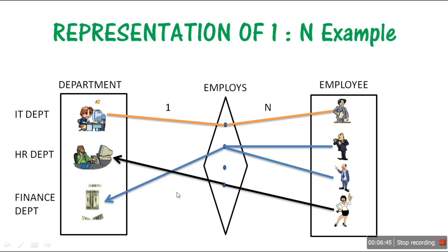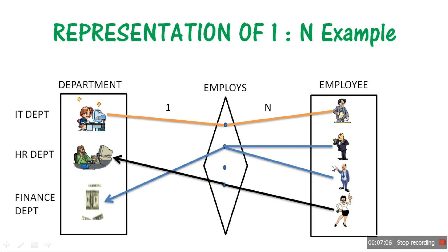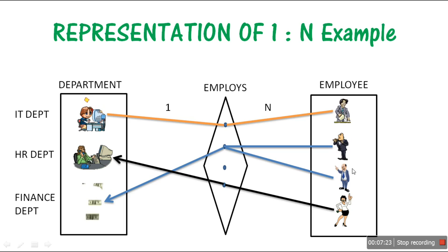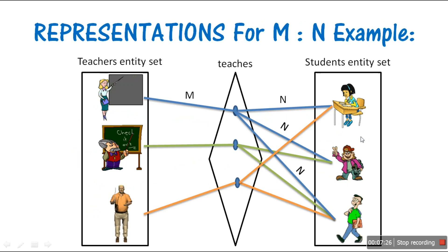To represent one-to-many (1:N) in an ER diagram, we use an arrow on the 'one' side and no arrow on the N side — just a straight line. Either we write '1' and 'N' and use no arrows, or we use an arrow on the one side and no arrow on the many side. The same representation applies for many-to-one (N:1) — arrow on the one side, no arrow on the N side.